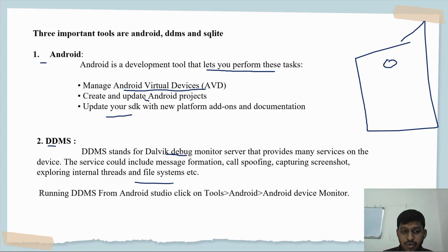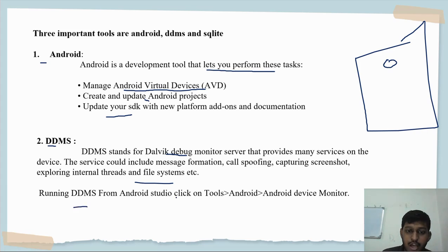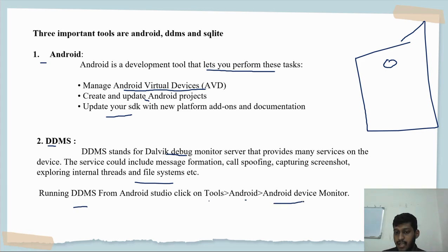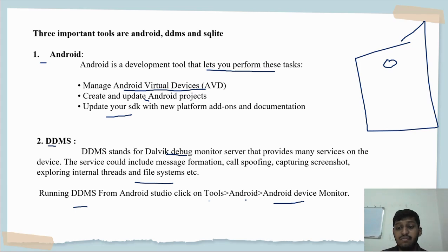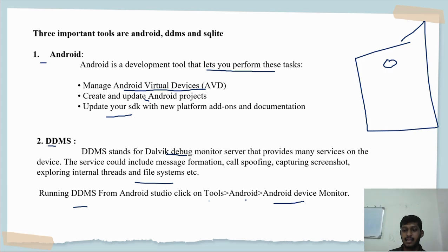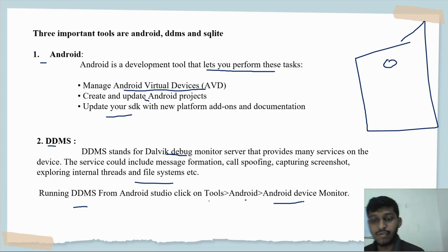To run DDMS in Android Studio, go to Tools, then Android, then Android Device Monitor, and you will find it there. You may not understand this now, but we will see this practically in the next chapter. I will show you everything in Android Studio when I install it - don't worry.